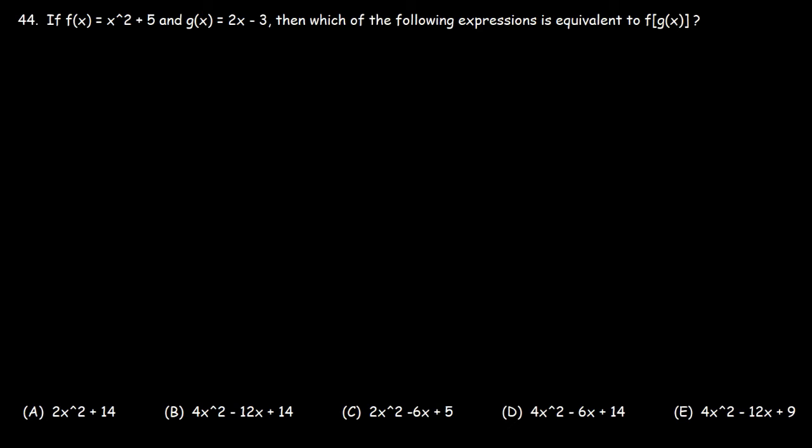Number 44: If f(x) is equal to x squared plus 5 and g(x) is 2x minus 3, then which of the following expressions is equivalent to f(g(x))? To find f(g(x)), what we need to do is take g and insert it into f.